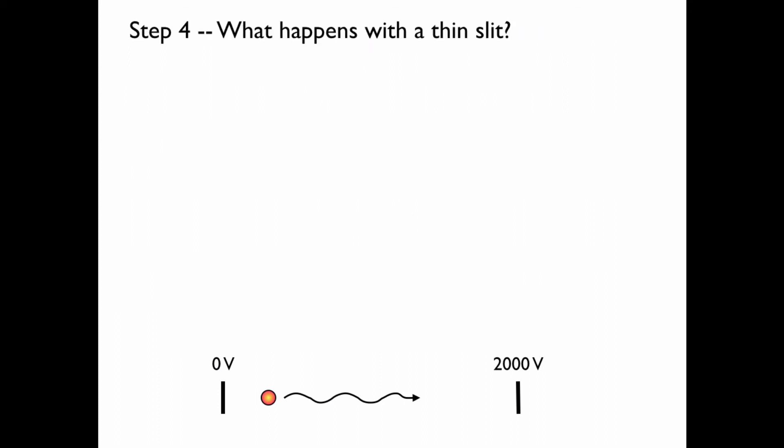Now what happens if the electron is passed through a thin slit? Well, recall that when photons or light pass through a thin slit—a slit that's on the order of the size of the wavelength of the photon—a diffraction pattern would be produced on a screen placed behind the slit.